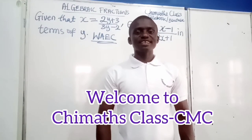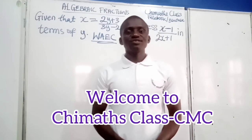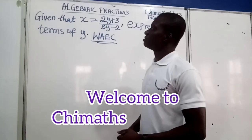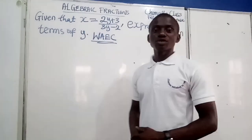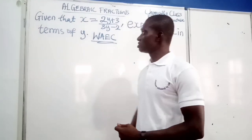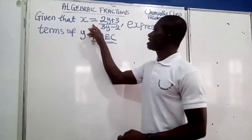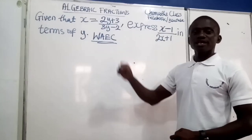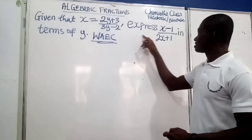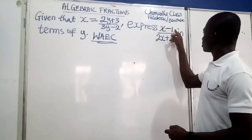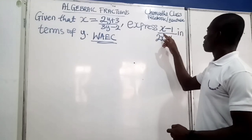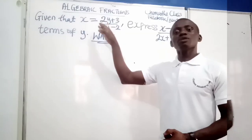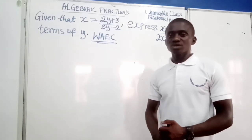Hi, welcome to my class. Today's lesson, let's see how we can solve this problem on algebraic fractions. We are given that x equals 2y plus 3 divided by 3y minus 2, and we should express x minus y divided by 2x plus y in terms of y — a problem on substitution and fractions.